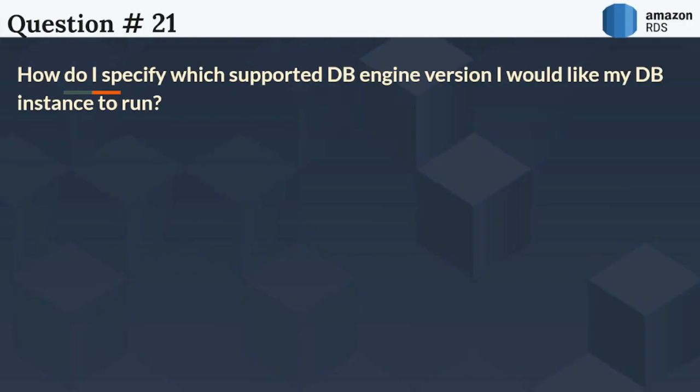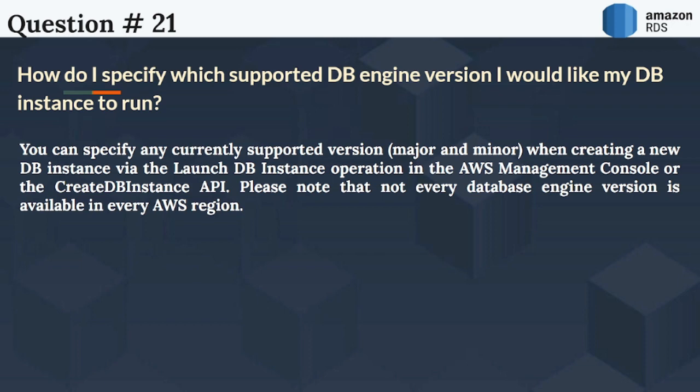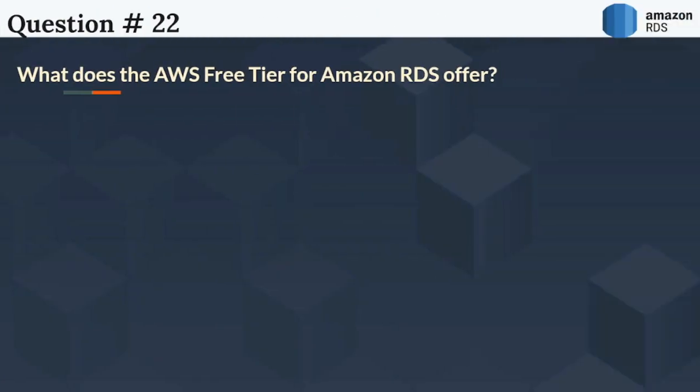The next question is: How do I specify which supported DB engine version I would like my DB instance to run? You can specify any currently supported version — major and minor — when creating a new DB instance via the Launch DB Instance operation in the AWS management console or the CreateDBInstance API. Note that not every database engine version is available in every AWS region.